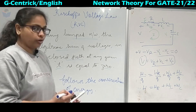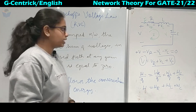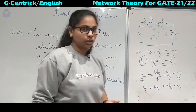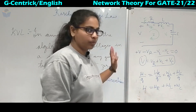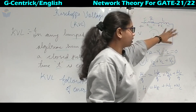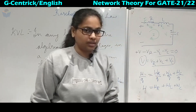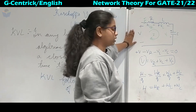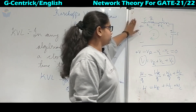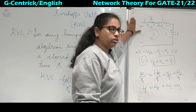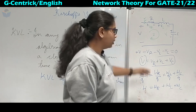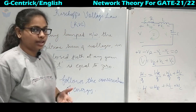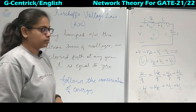The important point to note is that the direction of current decides the polarity of the resistor, inductor, and capacitor. The voltage source is the active element, so current has to leave the positive terminal. We will understand this better by solving a few problems.